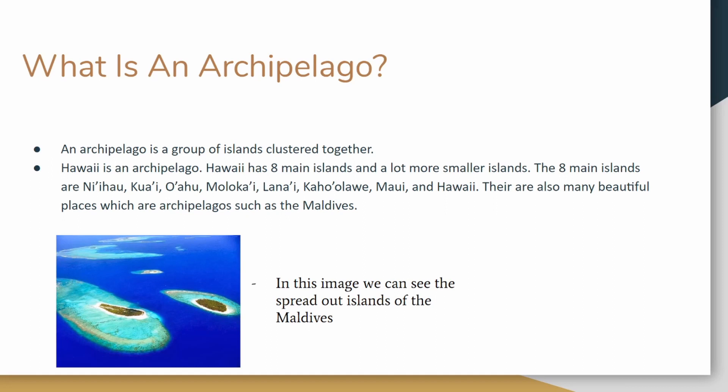Hawaii is located in the USA. If you don't know where Hawaii is — Hawaii has 8 main islands and a lot more smaller islands. The 8 main islands are Niihau, Kauai, Oahu, Molokai, Lanai, Kahoolawe, Maui, and Hawaii.